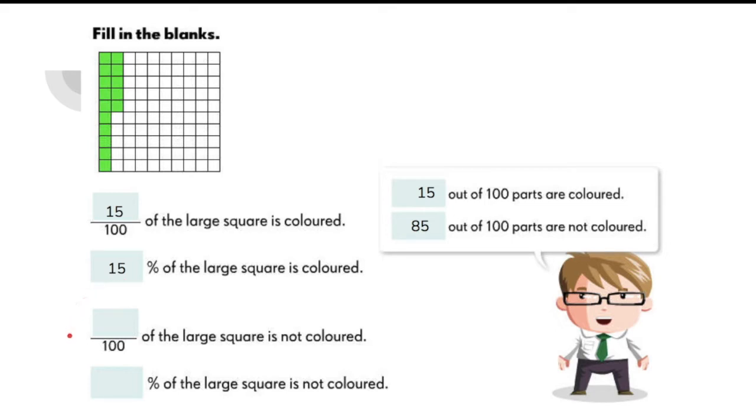Now what about the number of parts that are not colored? How do we express that in fraction? It's 85 over 100. And in terms of percent, it's equal to 85%.